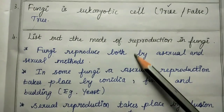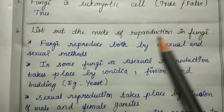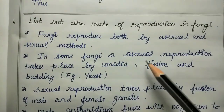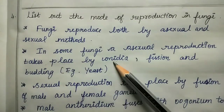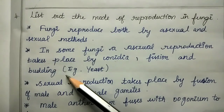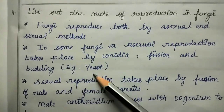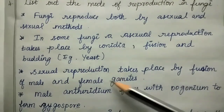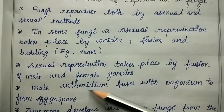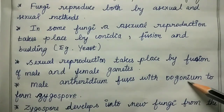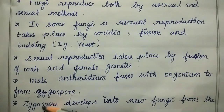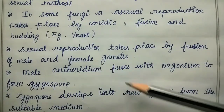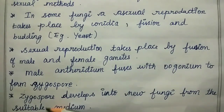Fourth question: list out the mode of reproduction in fungi. There are both asexual and sexual methods. Asexual reproduction takes place by conidia, fission, and budding. Example is yeast. Sexual reproduction takes place by the fusion of male and female gametes. Antheridium fuses with oogonium to form a zygospore. The zygospore develops into a new fungus.